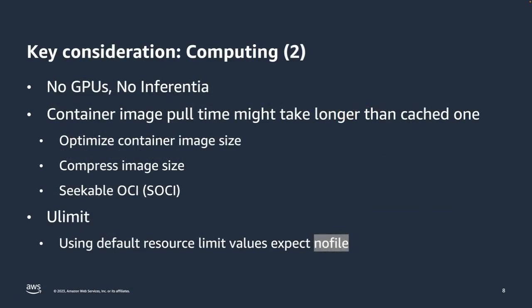Fargate does not support GPUs at this moment, so if your workload requires GPU resources, migration to Fargate is not currently possible. Additionally, container image pull time may take longer without caching — in ECS EC2, you can cache container images locally via the ECS agent parameter, whereas in Fargate, due to immediate provisioning upon request, caching is not available. You can speed up provisioning by optimizing container image size, using zstd or zstandard compression, or leveraging Seekable OCI (SOCI).